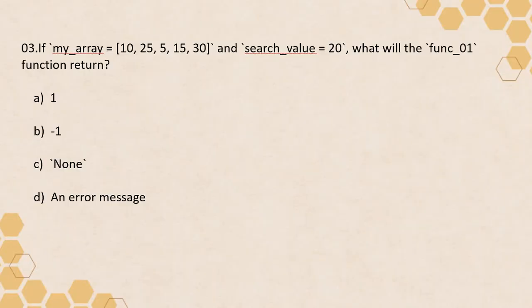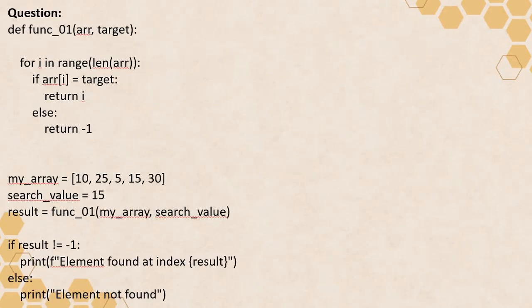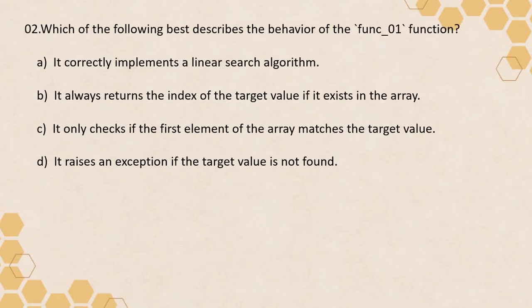The third question type can be: if a different sort of input or parameter is given for the search value, what will this particular function do? So if the input itself is changed, what is expected out of function_01? These types of questions can come and they are at an easy level — the logic is not difficult, there is not more than one function, and there are no very difficult operators.